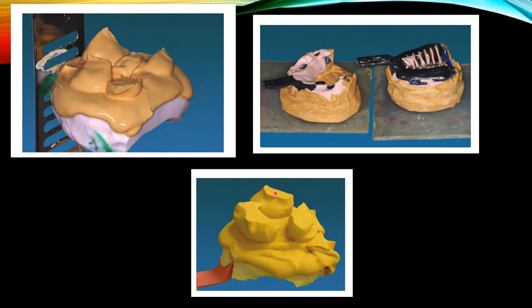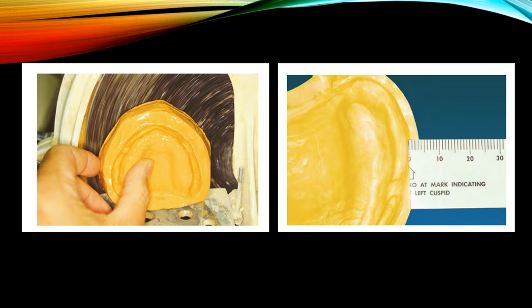In this picture, it shows trimming the retention nodules flat will stabilize the initial pour when inverted into the second pour of stone. The bottom of the cast is then trimmed using a model trimmer, so that the ridge crests are parallel to the bottom or bench top, and the thinnest portion of the base of the cast is approximately 12 mm or half an inch thick.